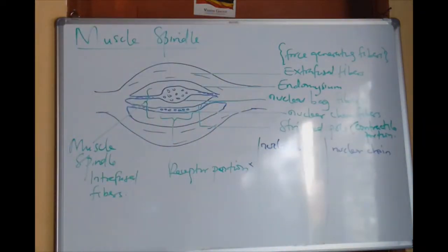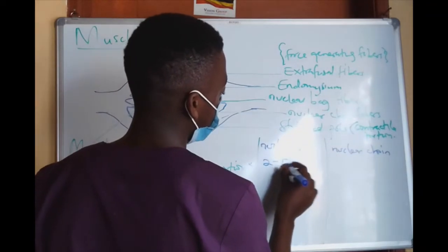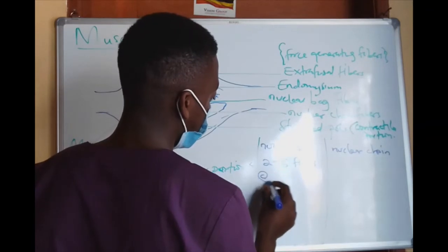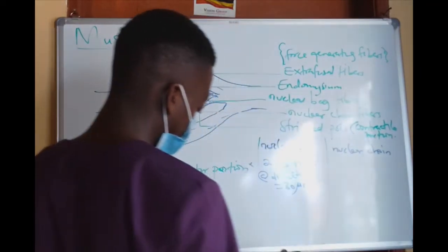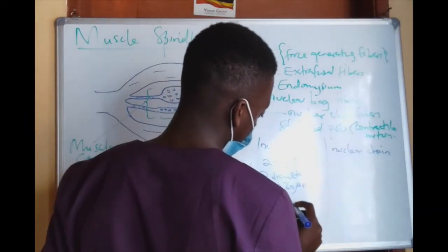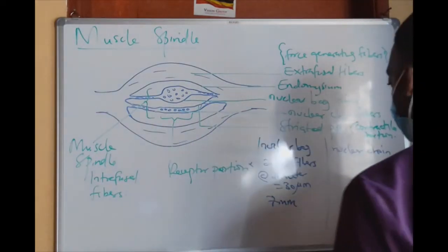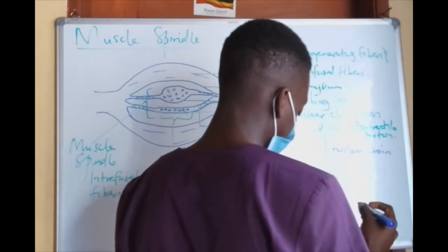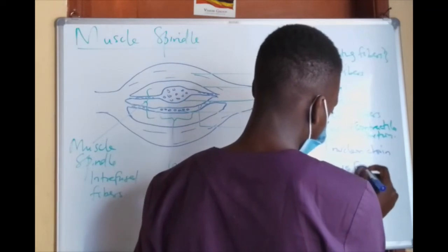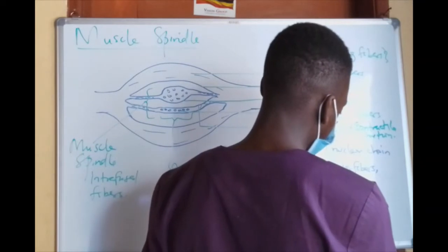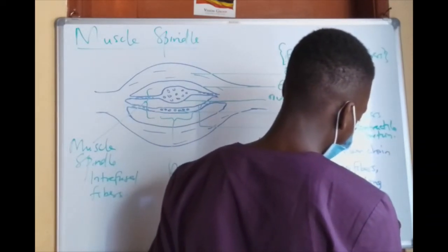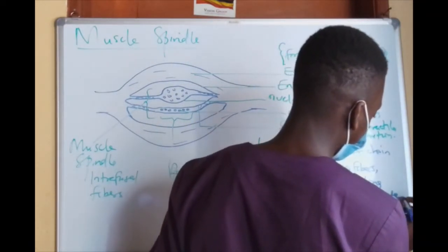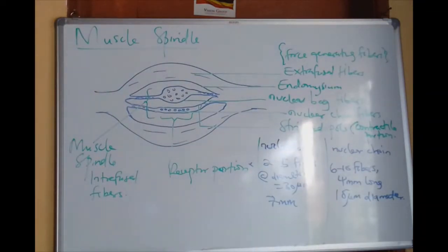In terms of size: the nuclear bag fibre is about 7 micrometers in length and 30 micrometers in diameter, and there are 2 to 5 fibres forming the bag. The nuclear chain fibre is about 4 mm long and 15 micrometers in diameter. That is basically how you can compare the nuclear bag and nuclear chain fibres.